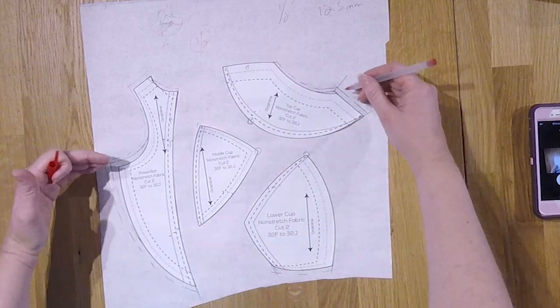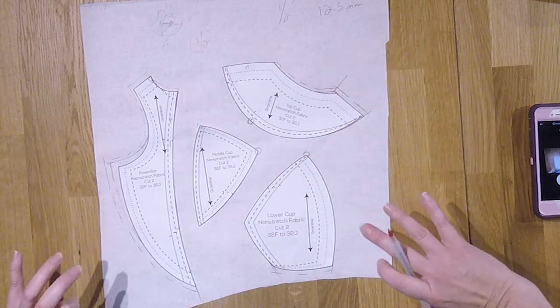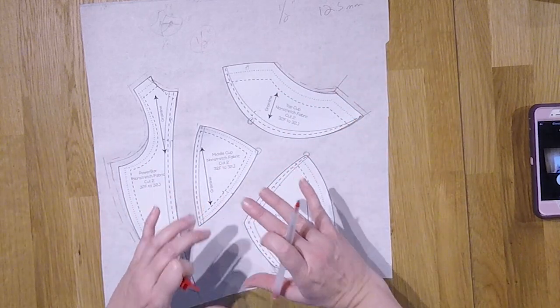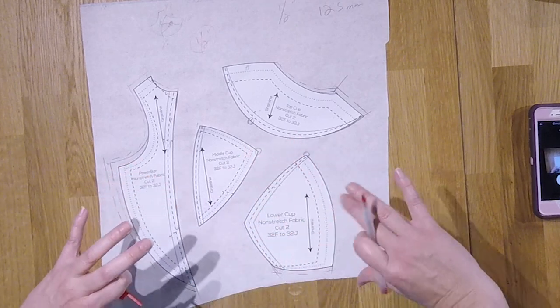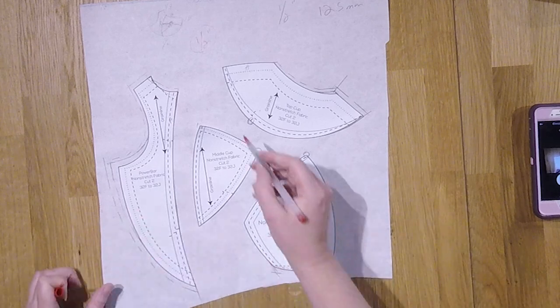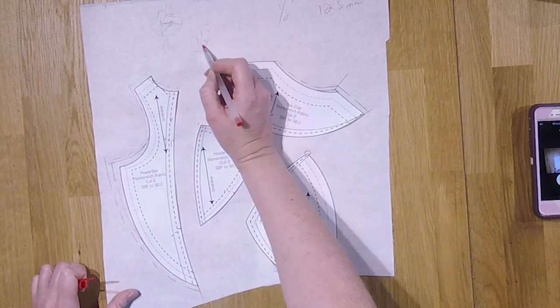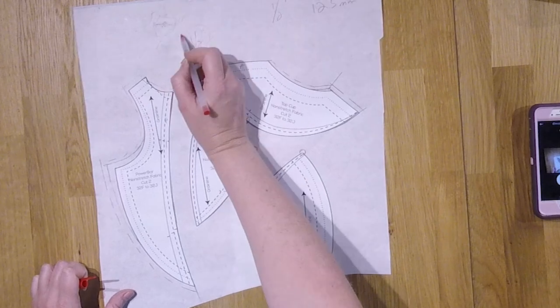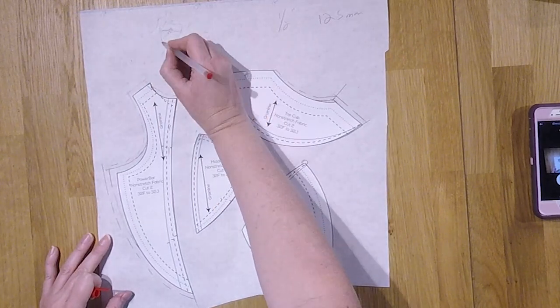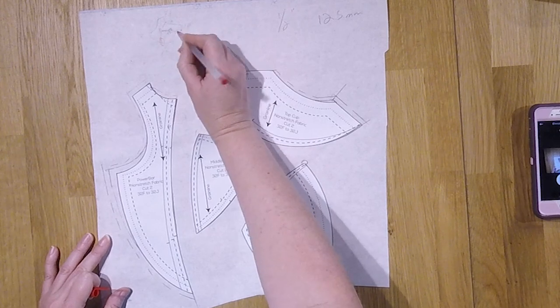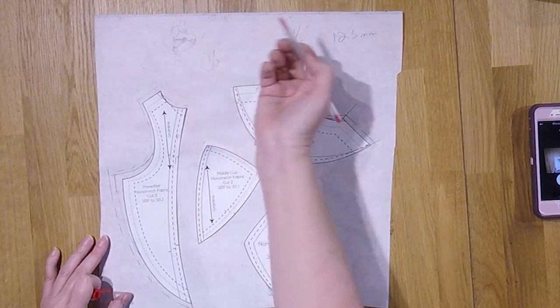So what we're going to do is we're going to take that half an inch and we're going to distribute that. So yes we can easily change on the top, but ideally we want to change the volume inside the cup.